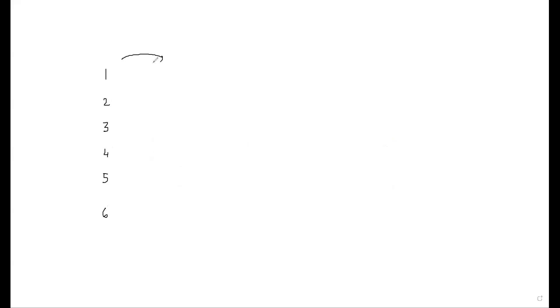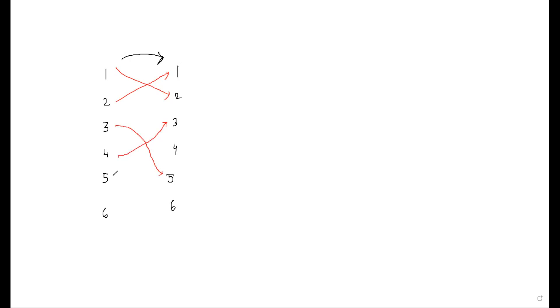The set is {1, 2, 3, 4, 5, 6} mapping to the same set. It's a bijection, so each function has a unique output and it's onto — therefore it must be a permutation. One example of such a bijection: 1 goes to 2, 2 goes to 1, 3 goes to 5, 4 goes to 3, 5 goes to 6, and 6 goes to 4.